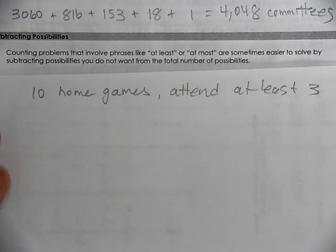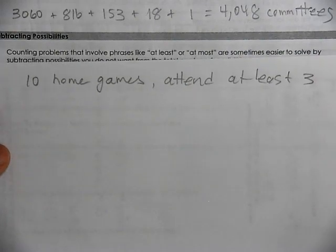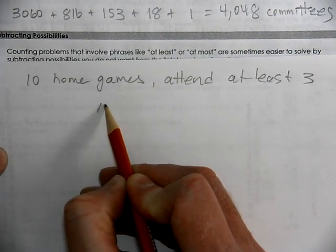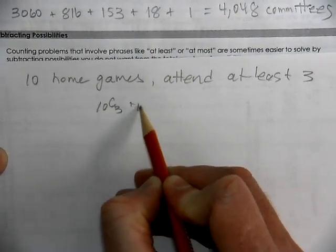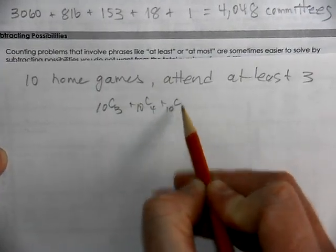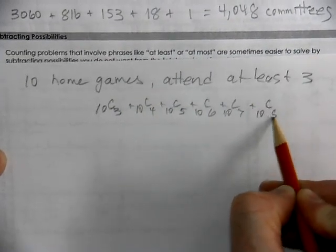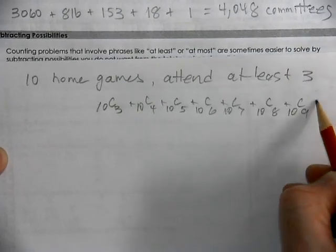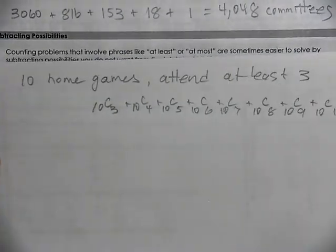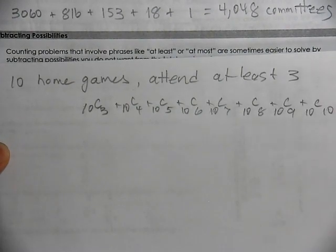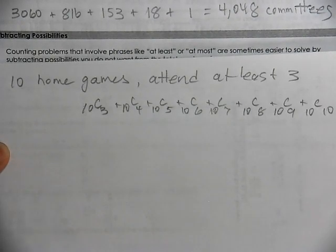That means we're going to attend three or more games. One way to think about this is 10C3 plus 10C4 plus 10C5 plus 10C6 plus 10C7 plus 10C8 plus 10C9 plus 10C10. That's a lot of calculations, but it's reasonable — there are eight calculations in there and you could do that.